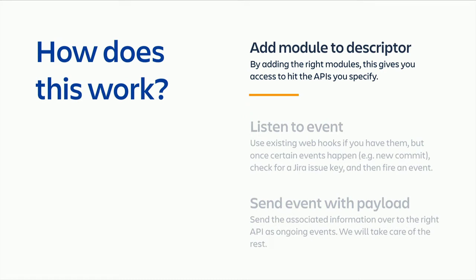So how does it work from a perspective of writing code and integrating with Jira? Everything we've done is currently based around using Atlassian Connect apps. When you build a Connect app, you provide a module descriptor saying what APIs and capabilities you want to extend within Jira. For each of those four APIs, we've defined a module type — for example, if you want to call the Build API, you define a module descriptor called the build provider.